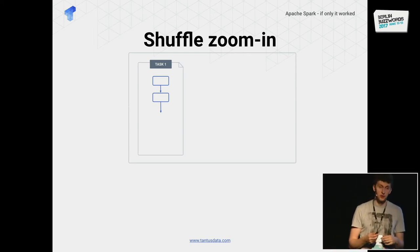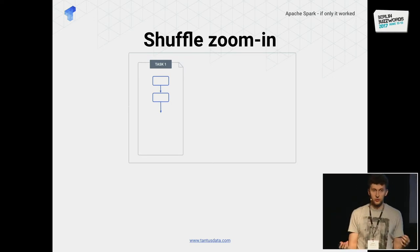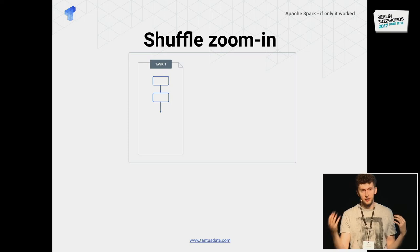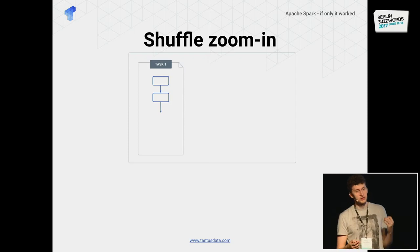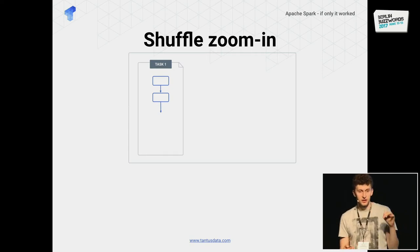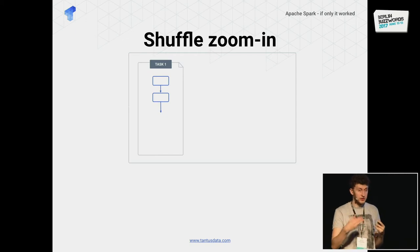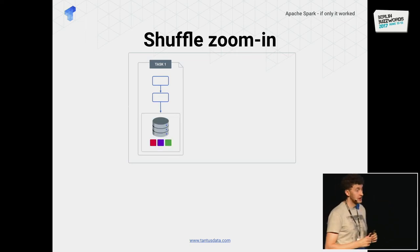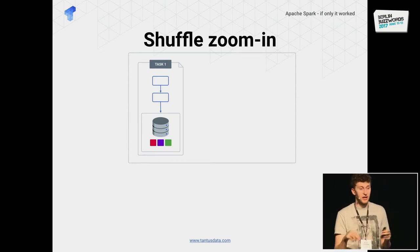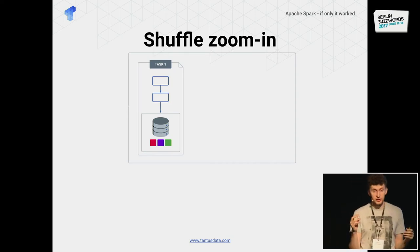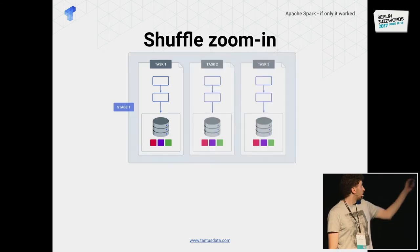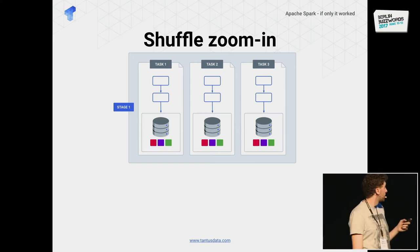Let's zoom into shuffle. You might ask: why do I need to know what's going on under the hood? Why not just rely on the Spark API? The answer is you really need to understand what's going on under the hood in order to understand the problems you might face and eventually solve them. There is a task which is processing some partition, pipelining operations like map, flat map, and filter. Eventually we get a result, which gets stored to a local disk, split into multiple buckets. Each bucket is responsible for a certain group of keys. All the other tasks do exactly the same.